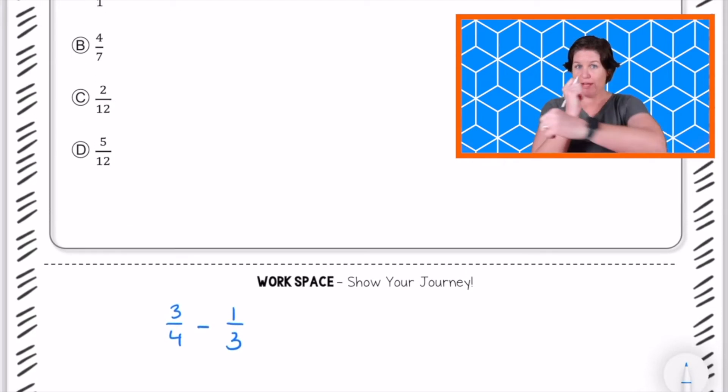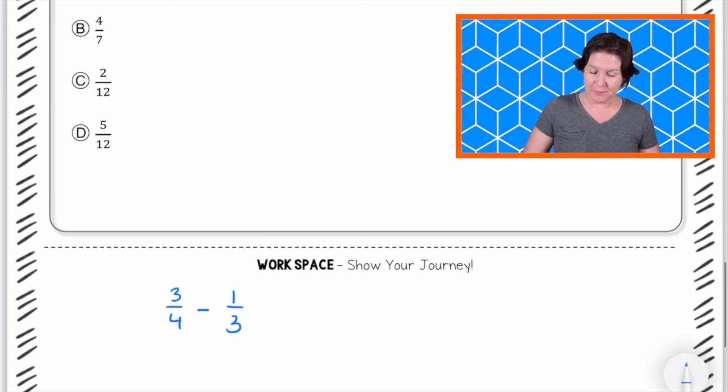I know that when we add or subtract, our denominators must match, and I don't see matching denominators here. So what I'm going to do is find the least common denominator of 4 and 3, my two denominators that I have. How do I do that? Well, I put the multiples of each one of those there.